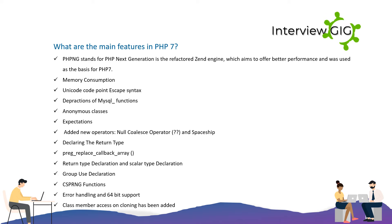Key features of PHP 7 include: improved memory consumption, Unicode code point escape syntax, deprecation of MySQL underscore functions, anonymous classes, expectations, new operators such as the null coalescing operator and the spaceship operator, declaring return types, preg_replace_callback_array, return type declaration and scalar type declaration, group use declaration, CSPRNG functions, better error handling, 64-bit support, and class member access on cloning.